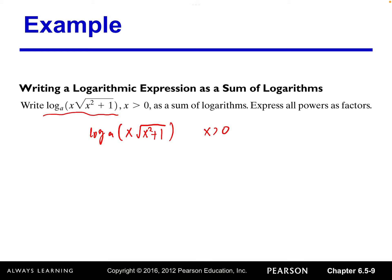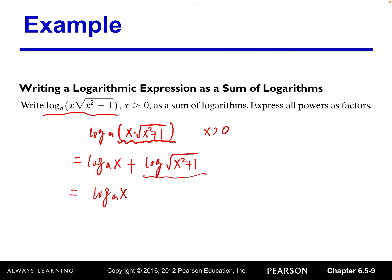This is a product — x times the square root term — so we can write it as the sum of two logs: log base a of x plus log base a of the square root of (x squared plus one). The square root of (x squared plus one) is equivalent to (x squared plus one) raised to the one-half power, so the one-half moves to the front as a coefficient.